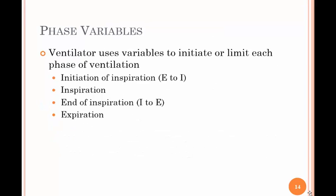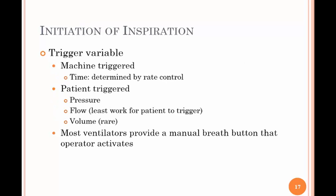Phase variables are used to initiate or limit each phase of ventilation: the initiation of inspiration, the inspiration itself, and the end of inspiration. The trigger variable initiates the breath — it can be machine or patient triggered. In the machine trigger, the variable is time, determined by the rate control. If the rate is set at 10 breaths per minute, the machine will deliver an inspiration every six seconds. If it's patient triggered, it can be pressure or flow.